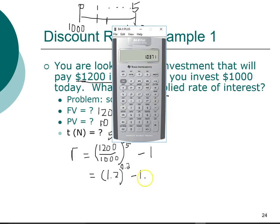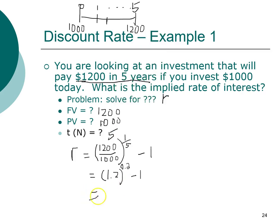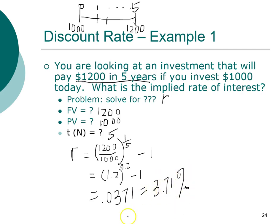So 1.2 raised to the power of 0.2 equals 1.0371. We subtract 1, giving us 0.0371, which is 3.71 percent. That's the answer you get when using the formula.